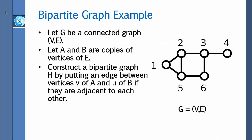Let G be a connected graph where V represents the set of vertices and E represents the set of edges. Let A and B be copies of the vertices of G. Construct a bipartite graph H by putting an edge between vertex v of A and vertex u of B if they are adjacent to each other in G.